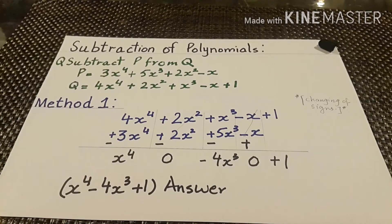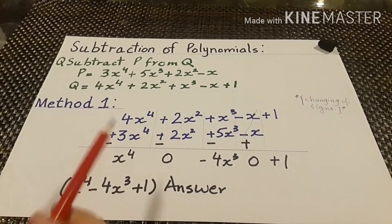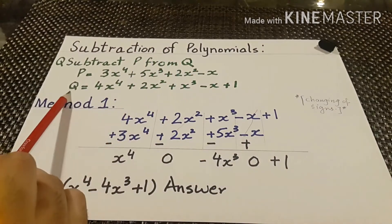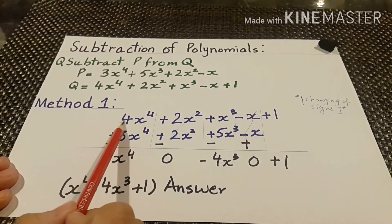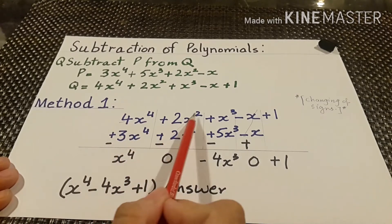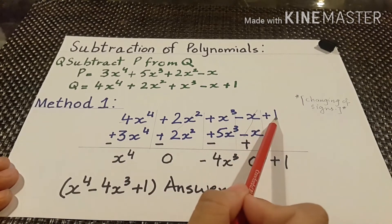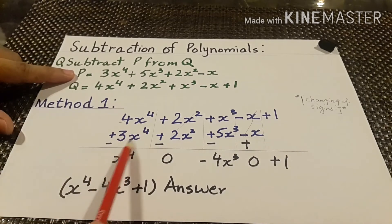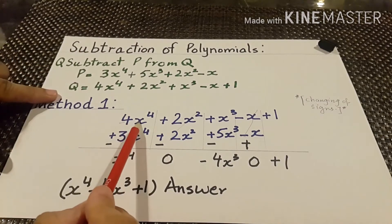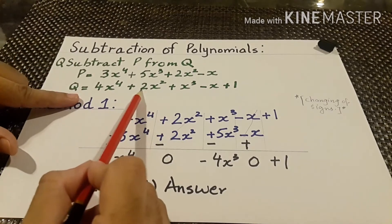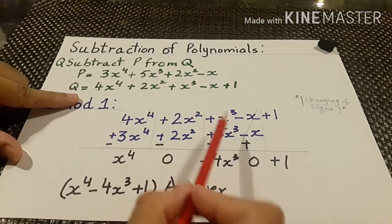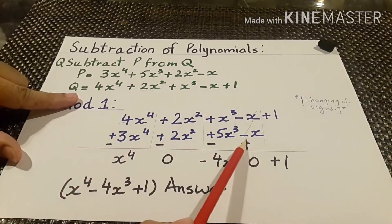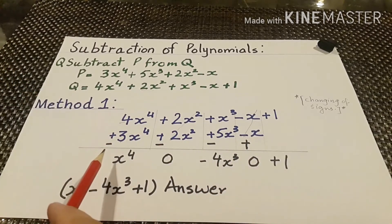The first method: we write the values in this form. We have to subtract p from q, so we write the value of q here — 4x to the power 4 plus 2x squared plus x cubed minus x plus 1 — and below we write the values of p: 3x to the power 4 under 4x to the power 4, then 2x squared, then 5x cubed, then minus x.